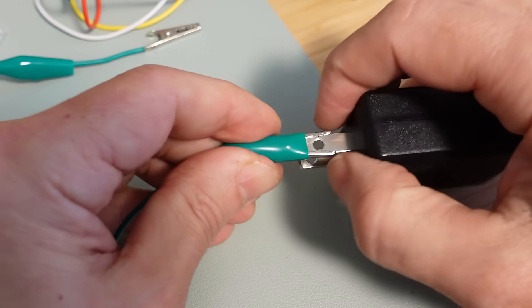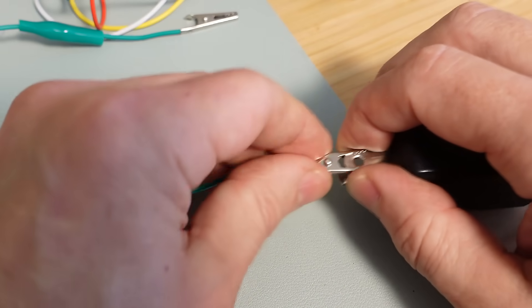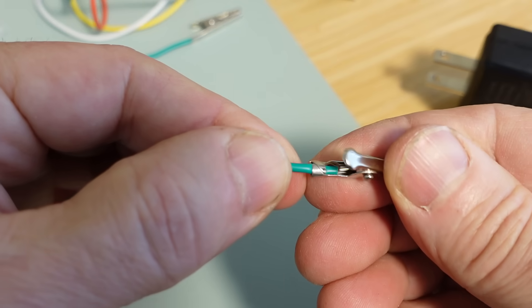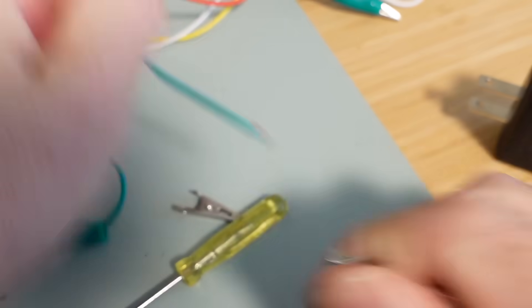The problem with cheap clip leads is they always just fold it over wire and crimp shut and that doesn't always make a very good connection. So, let's re-solder that.